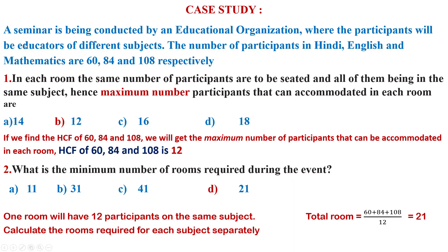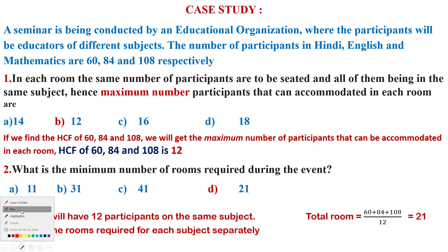The question is: a seminar is being conducted by an educational organization where the participants will be educators of different subjects. The number of participants in Hindi, Mathematics, and a third subject are 60, 84, and 108 respectively. From this paragraph, how many types of questions can you frame or discuss?